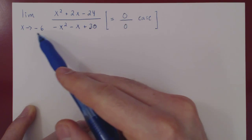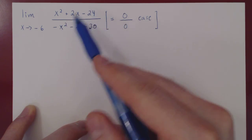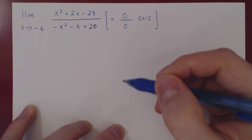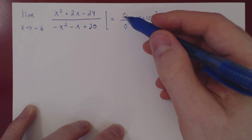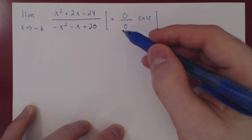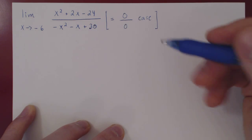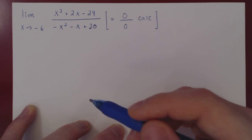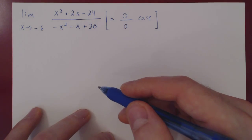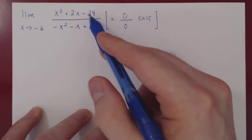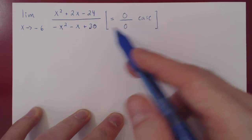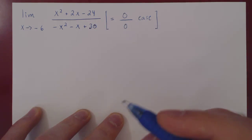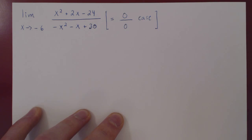As x is approaching negative 6, both our numerator and denominator are shrinking to 0. So it's not clear what's going to happen — something very small over something very small can really yield just about anything. But we have a piece of information: both polynomials are 0 when x is negative 6.